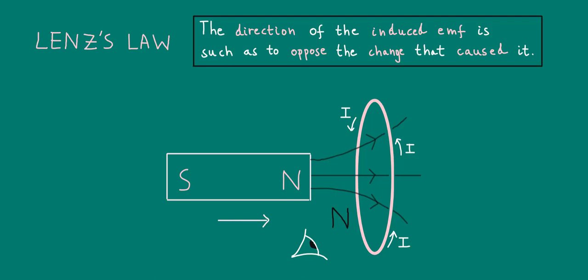In other words, the direction of the induced current, which is determined by the direction of the induced EMF, is in precisely the right direction to oppose the change that caused it, the movement of the bar magnet. This is how Lenz's Law enables us to predict what will happen in the coil as the magnet moves towards it.